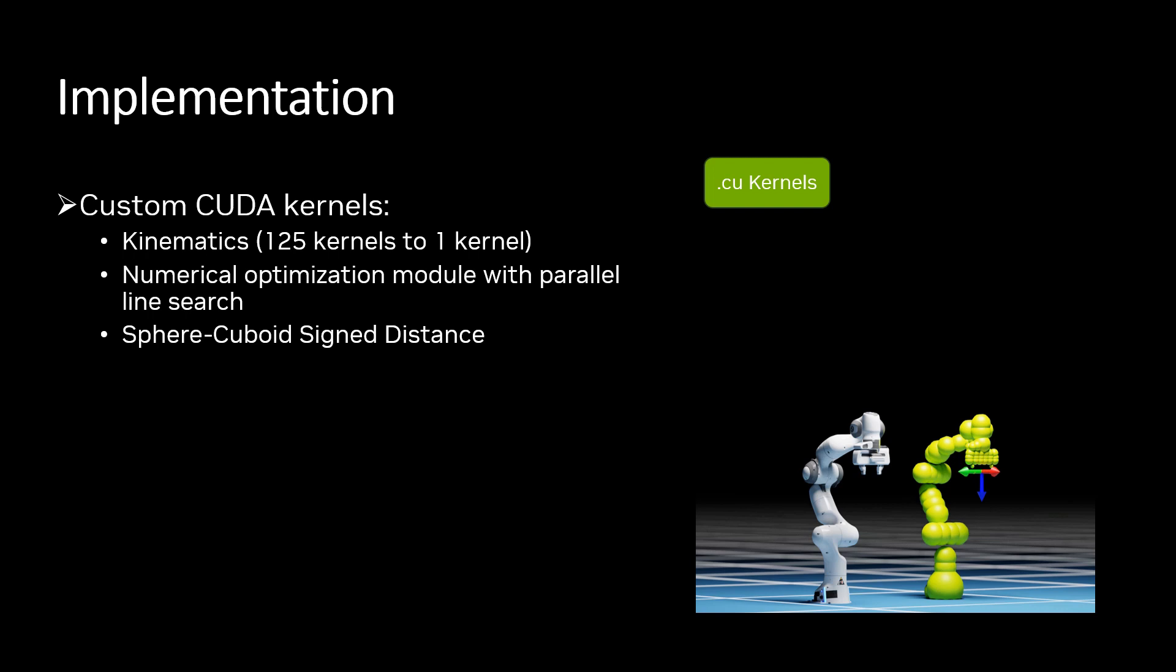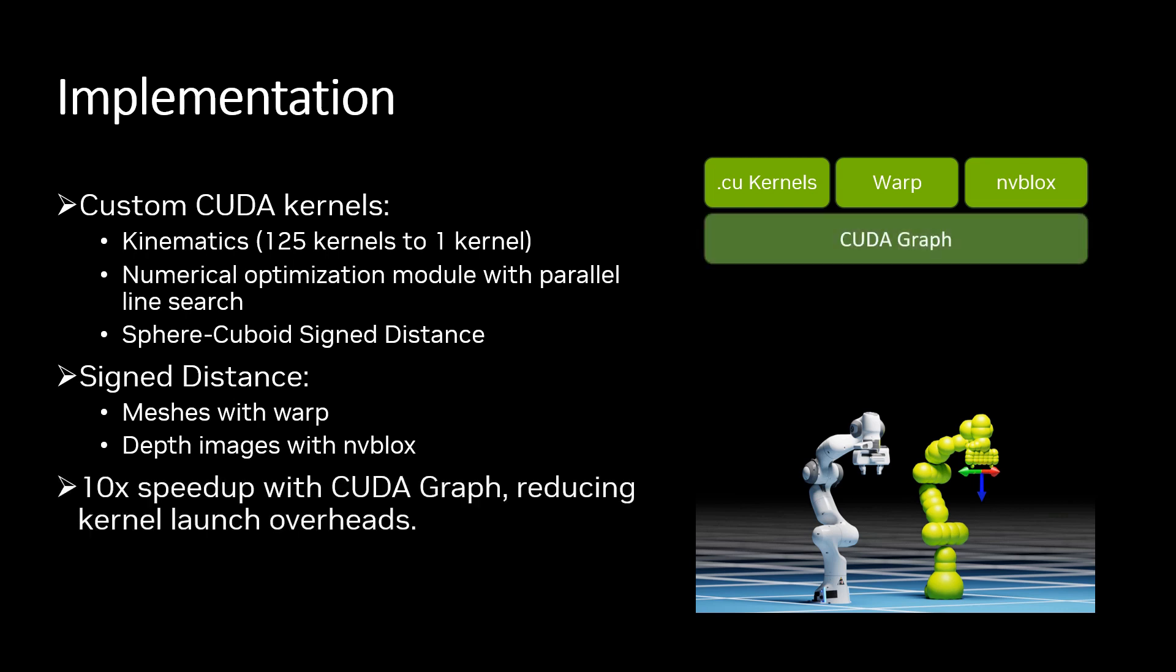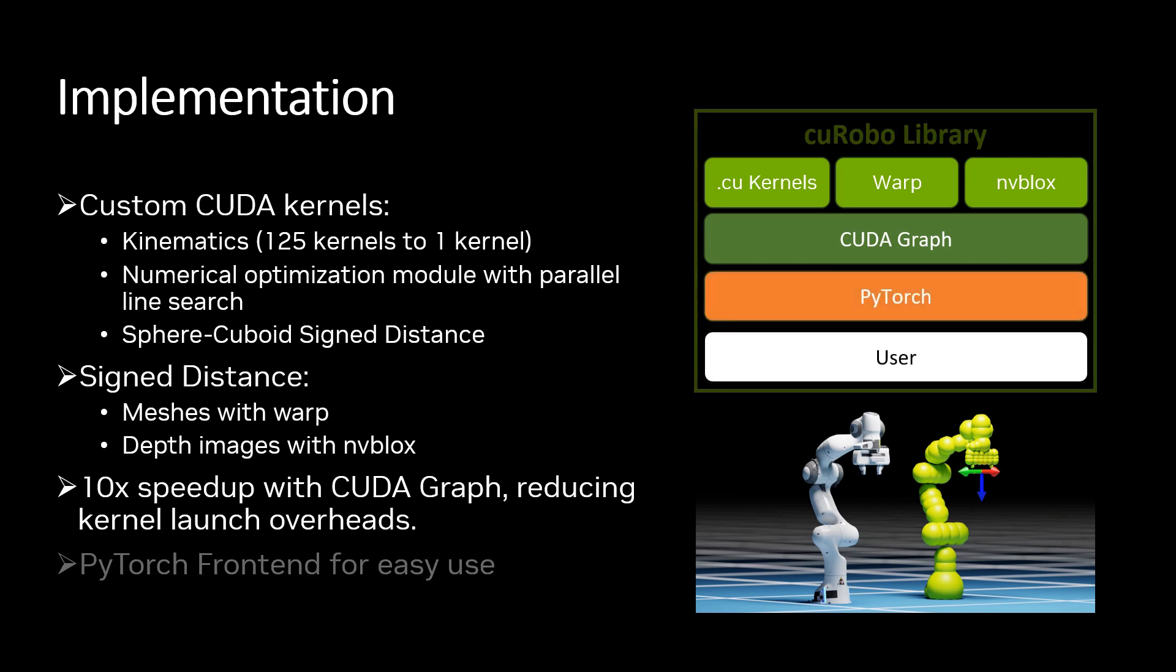Kurobo leverages several NVIDIA technologies, including mesh signed distance through NVIDIA's warp and depth image-based signed distance queries through NVIDIA's NVblox. The optimization iterations are implemented with support for CUDA graphs, which gives a 10x speedup in computations overall by reducing kernel launch overheads. We could have stopped here and let users use this library in C++, but we integrated all these components within PyTorch to provide a Python frontend to Kurobo. This also makes implementing new cost terms and optimization problems more accessible.